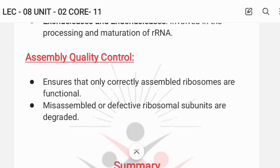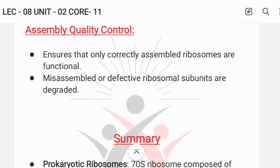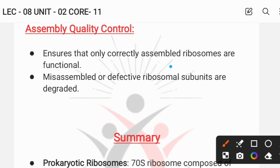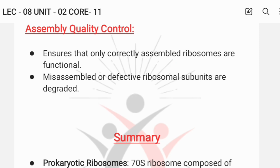Assembly quality control ensures that only correctly assembled ribosomes are functional. The 30S and 50S subunits must be assembled correctly to be considered functional. Misassembled or defective ribosomal subunits are degraded.